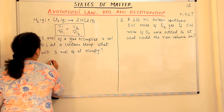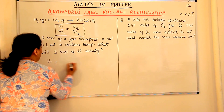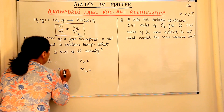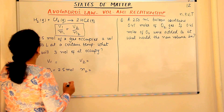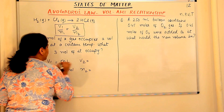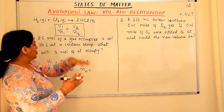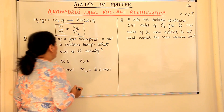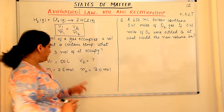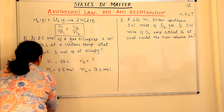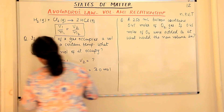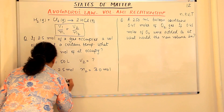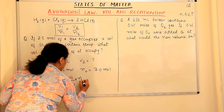We identify: N₁ = 2.5 mol, V₁ = 50 liters, N₂ = 3.0 mol, and we need to find V₂. Temperature is constant and pressure is constant. Using the relationship V₁/N₁ = V₂/N₂, we rearrange to get V₂ = (V₁/N₁) × N₂. Substituting: V₂ = (50 liters / 2.5 mol) × 3.0 mol. Mole and mole cancel.